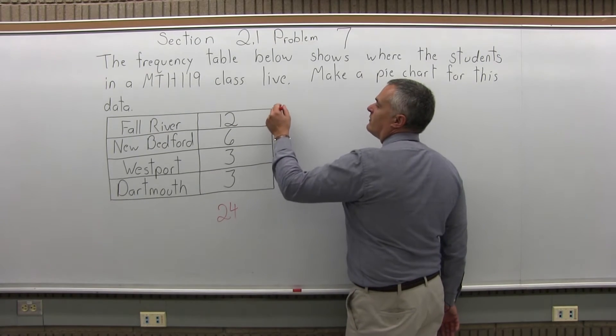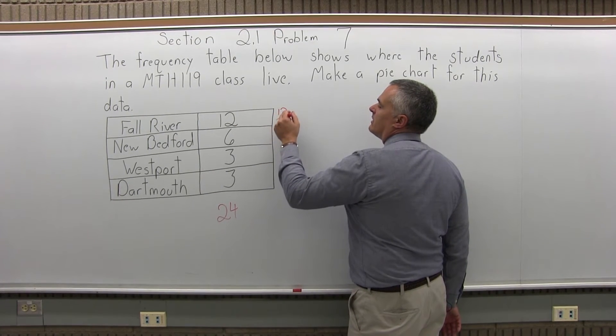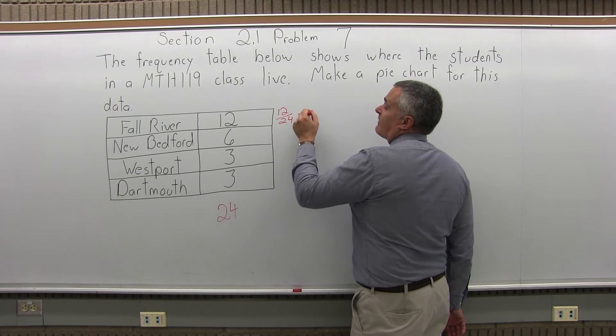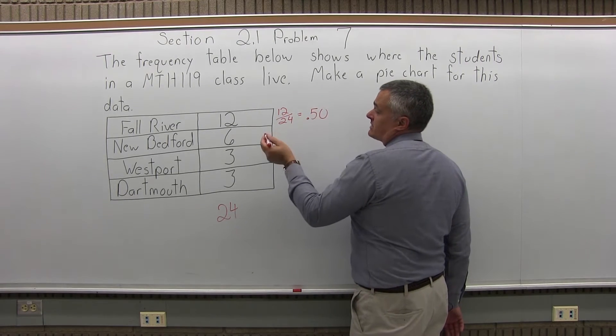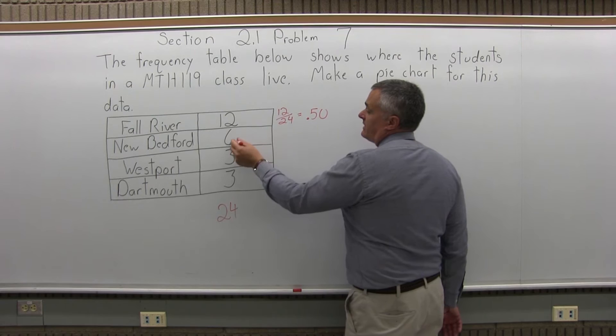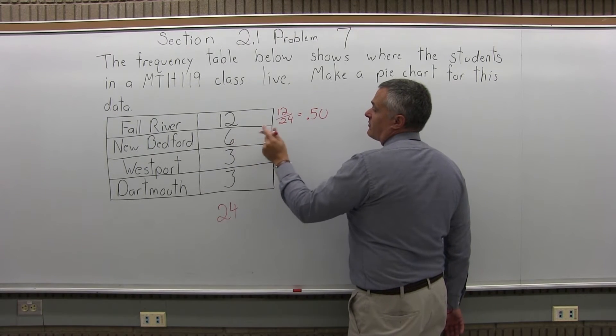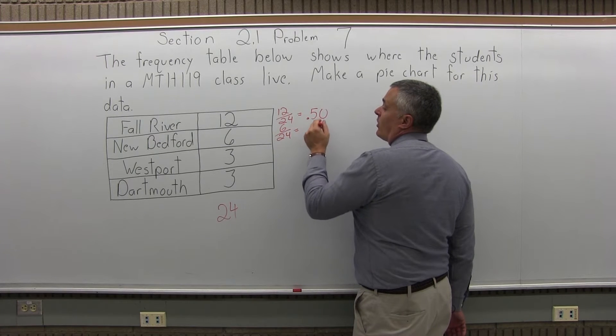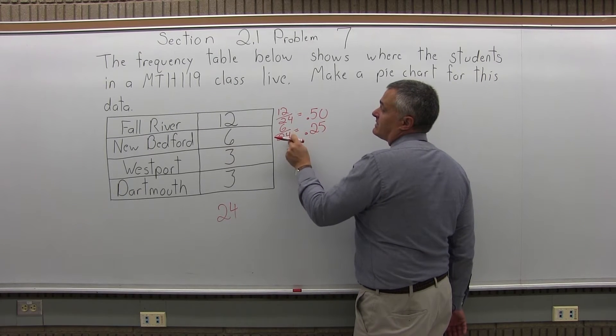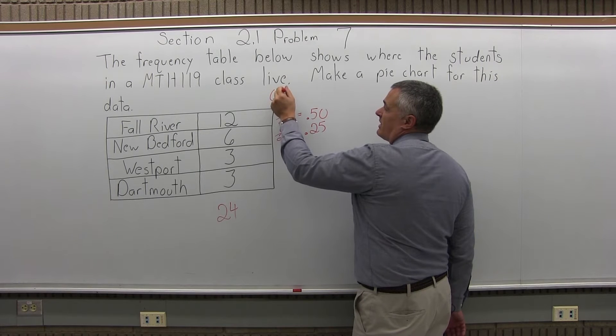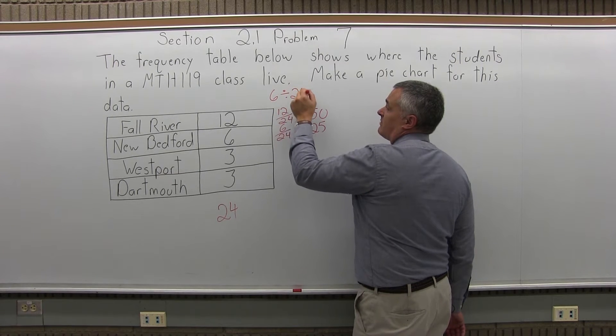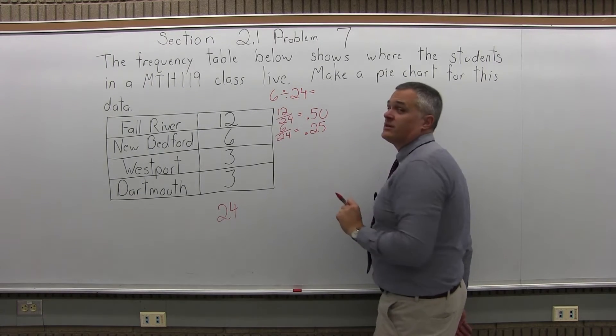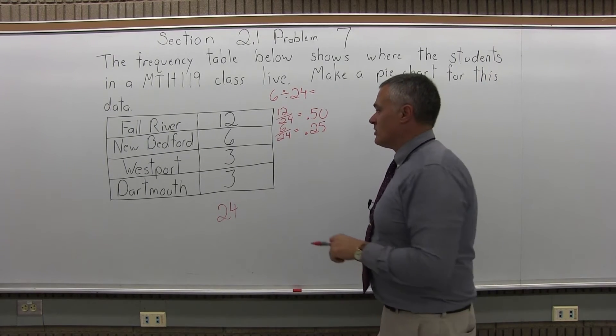So, 12 out of 24 is one-half or 50% of the students come from Fall River. Then, the next group, 6, are from New Bedford. So, 6 over 24 is one-quarter or 0.25. And again, I see this very easily. If you don't, on your calculator, just divide 6 divided by 24 equals, and the calculator will tell you it's 0.25 or 25%.